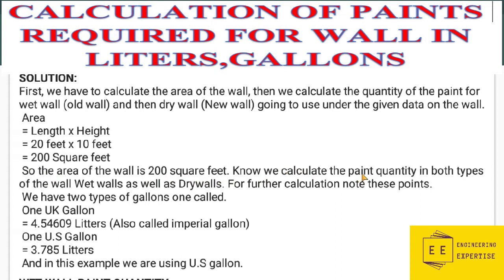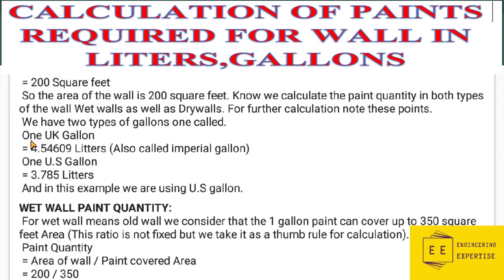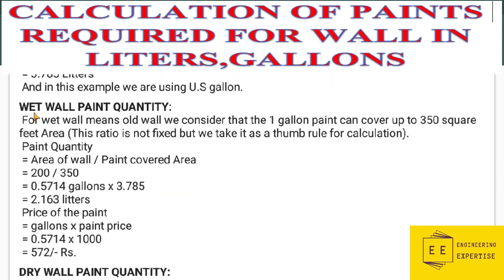For further calculation, note these points: we have two types of gallons — one called the UK gallon and the other the US gallon. The UK gallon has 4.54 liters and is also called the imperial gallon. In this example we are using the US gallon, which has a capacity of 3.785 liters. First we will calculate for wet wall paint quantity, then for dry wall.